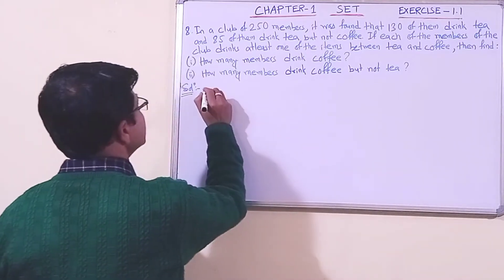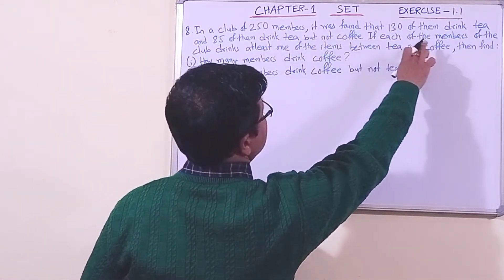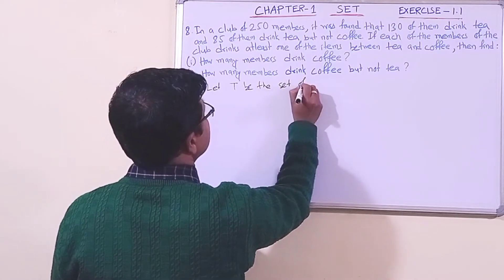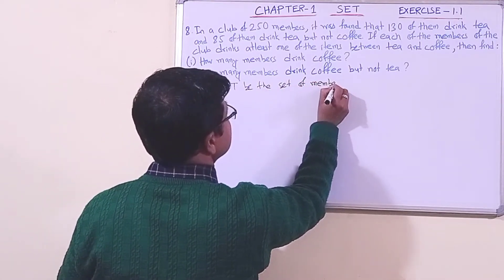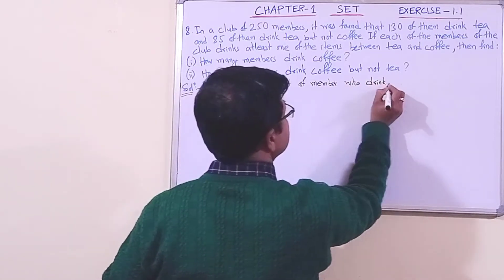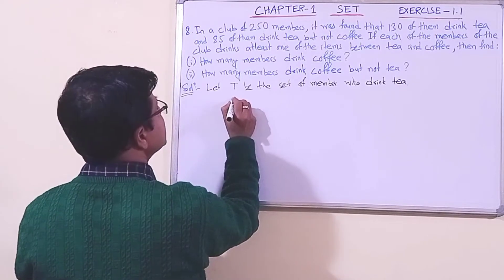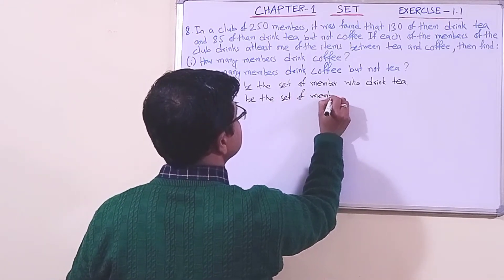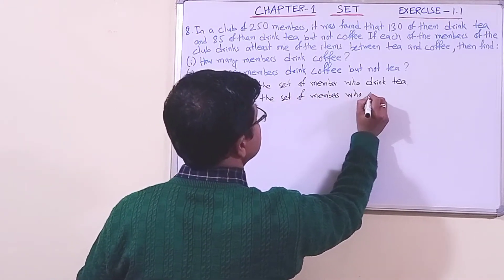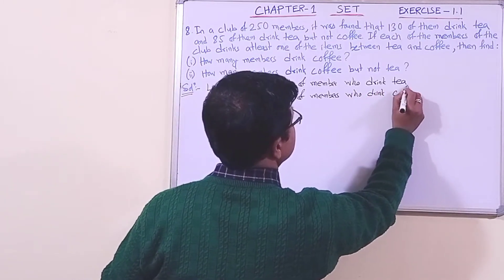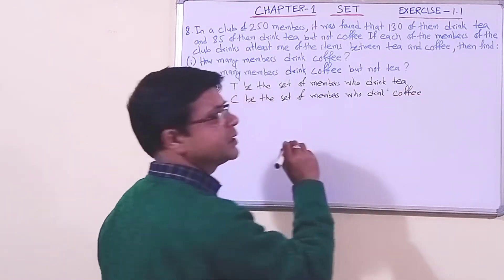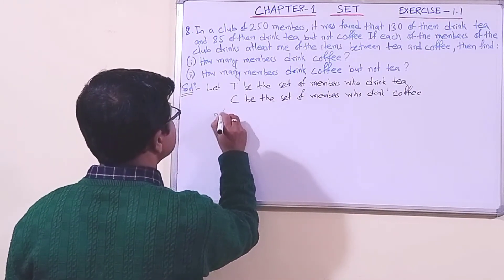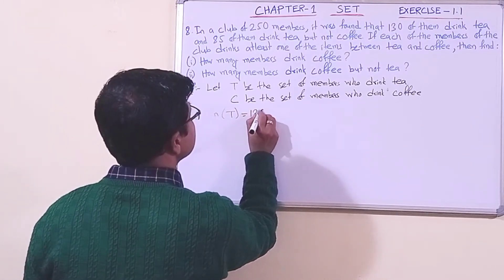Let tea be the set of members who drink tea, and let C be the set of members who drink coffee. Now let us write down what is given to us: 130 of them drink tea, that is n(T) = 130.